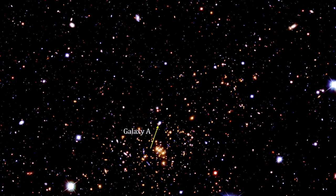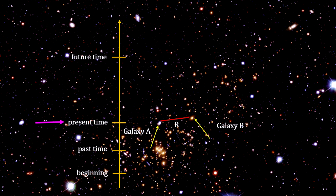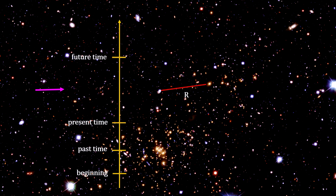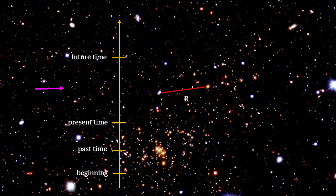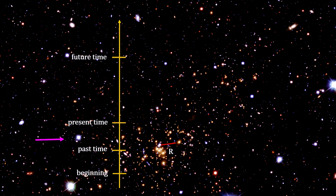Consider our galaxy, Galaxy A, separated by a large distance from Galaxy B. In Galaxy A's frame of reference, it is at rest. Galaxy B is moving away, and its distance from the Milky Way will continue to increase as time goes on. Going backwards in time, Galaxy B was getting closer to the Milky Way. We see that, at some point in the distant past, they would have been extremely close to each other.